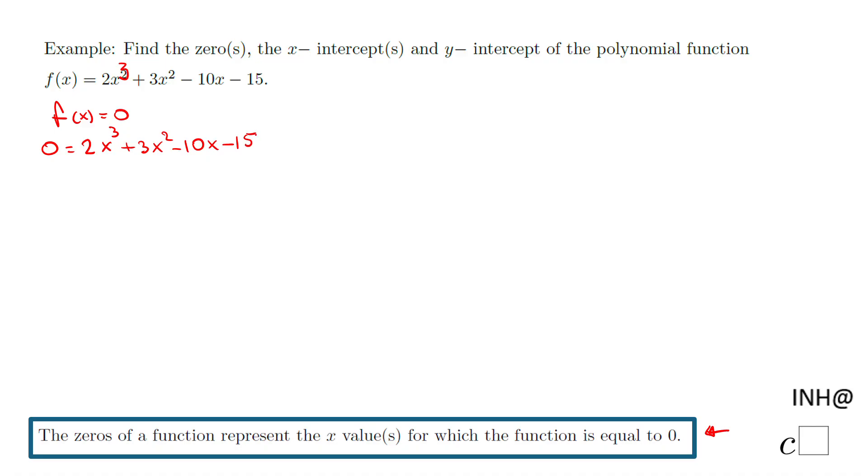So the question is how do I solve this one? Whenever we have something like this, my first thing will be to use factoring by grouping. I'm going to group these two terms first and I notice x² is the GCF, the greatest common factor. So we have x²(2x + 3).